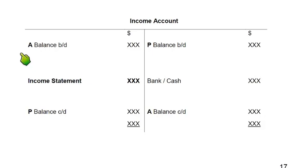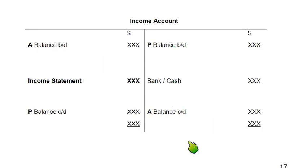This is known as the APPA account — A, P, P, A. This is opposite to PAAP — it is the mirror image. If you see an expense account in the mirror, it becomes the income account. Things debited in an expense account come on the credit side in an income account, and things credited in an expense account come on the debit side in an income account. Therefore, rather than PAAP, we write APPA: accrued, prepaid, prepaid, accrued.